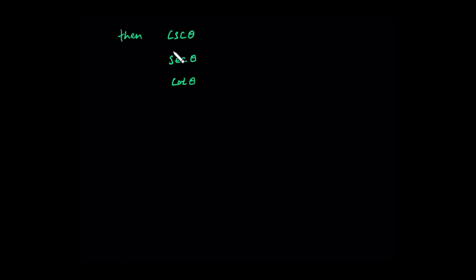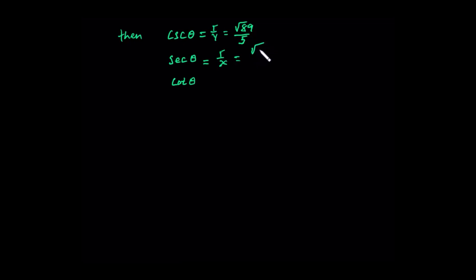Now let's find cosecant of theta, secant of theta, and cotangent of theta. Cosecant of theta is the reciprocal of sine. Sine is y over r, so cosecant is r over y: r is root 89, y is 5. Secant is r over x: r is root 89, over x is negative 8, because the terminal side passes through the point P with coordinate negative 8 and 5. Cotangent is x over y, the reciprocal of tangent: x is negative 8, y is 5.